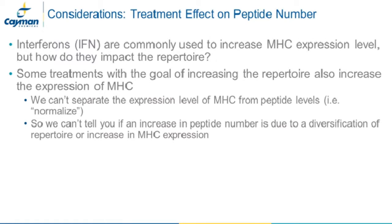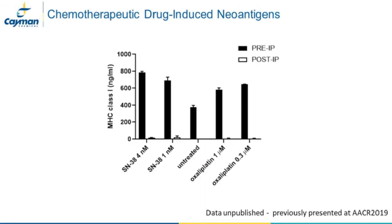Another consideration is how any treatments will impact the peptide number. Interferons are sometimes used to upregulate MHC expression, but the question remains how the stimulus may change the repertoire in unanticipated ways. Signaling changes have the distinct potential to be reflected in the immunopeptidome. Conversely, sometimes the goal is to find a treatment that will alter the immunopeptidome and potentially increase neoantigen generation. It is important to note that the number of peptides identified cannot be normalized to the amount of MHC.